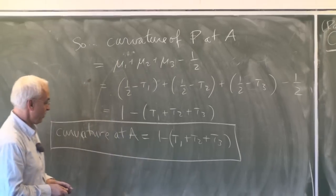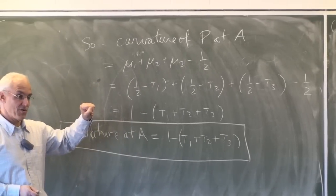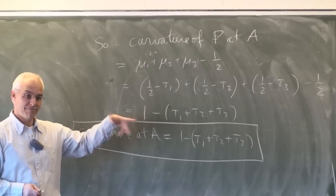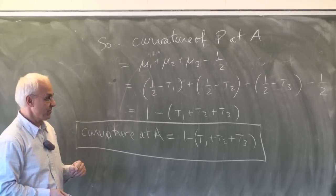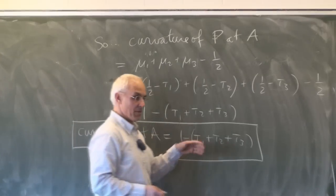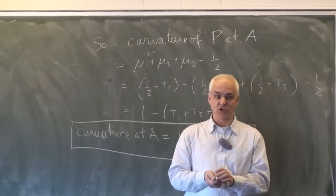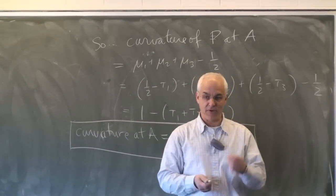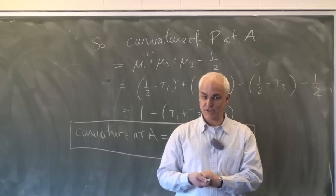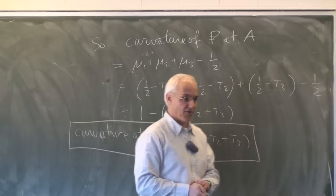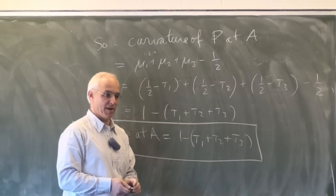So the curvature at vertex A equals 1 minus (tau1 + tau2 + tau3). Next time we'll extend this first to non-triangular faces, then discuss the total curvature of the polytope — summing over every vertex — and deduce Euler's formula from the result.